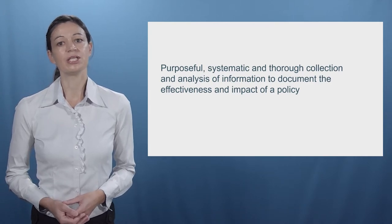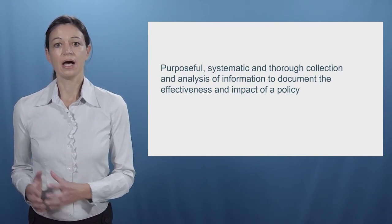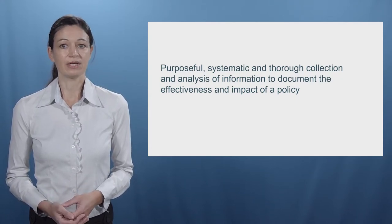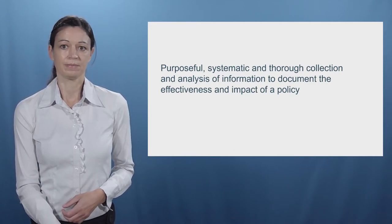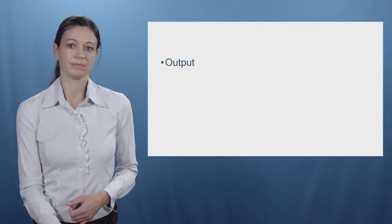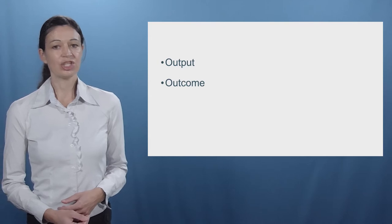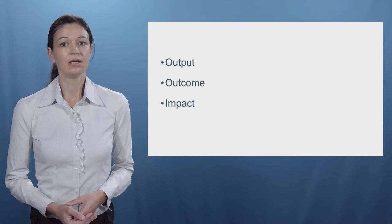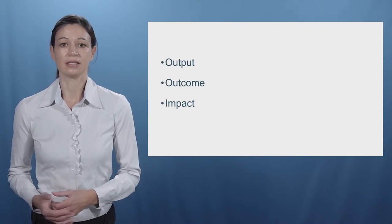We can summarize policy evaluation as the purposeful, systematic, and thorough collection and analysis of information to document the effectiveness and impact of a policy. When analyzing a policy's effectiveness in a systematic manner, three aspects can be differentiated: output, outcome, and impact. Output analyzes the laws, regulations, and infrastructure that were adopted. Outcome analyzes changes in actors' behavior as a result of the output. And impact looks at whether or not and to what extent the problem has been solved.